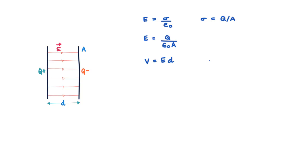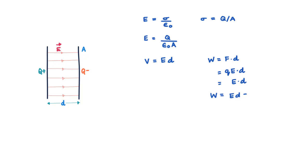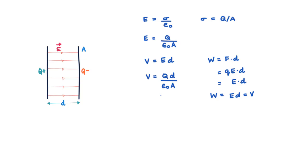To remind ourselves why V = Ed: potential difference is the work done in moving a unit charge from one plate to the other. Moving a unit charge across distance d, the work done is force F dot d. The force on a unit charge is E, and since displacement and force are parallel, work done is E·d. Substituting the value of E, we get V = Qd/(ε₀A). Using this in the equation C = Q/V, we get C = Q·ε₀A/(Q·d).